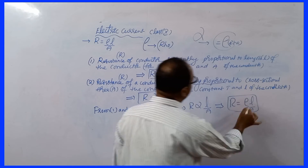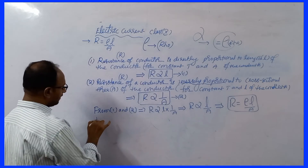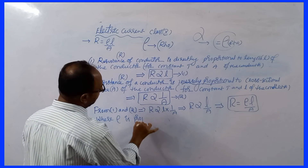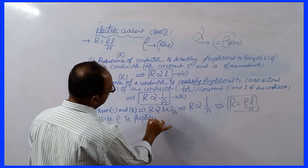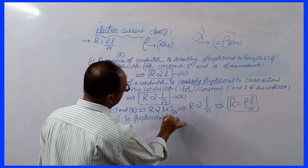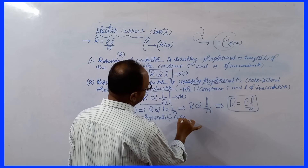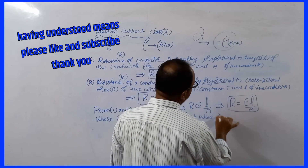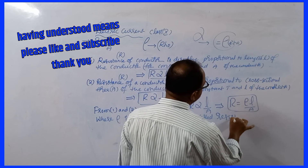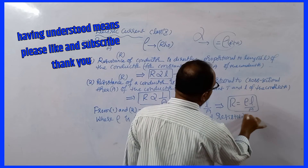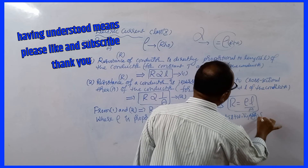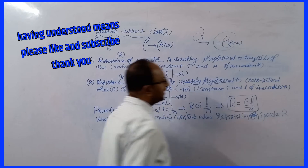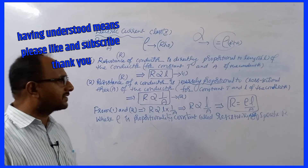Where rho is the proportionality constant, called resistivity, or it is also called specific resistance.